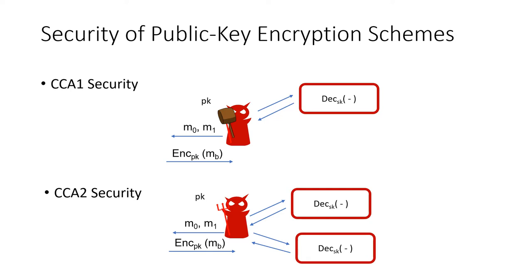One important difference for the purposes of this talk is the difference between CCA1 and CCA2 security. In CCA1 security, often called the lunchtime attack scenario, the adversary has access to a decryption oracle only before it obtains the challenge ciphertext. And once it sends two messages m0, m1 and gets an encryption of one of them, it loses access to the decryption oracle.